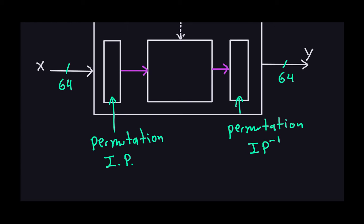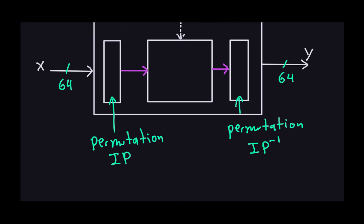The final permutation undoes whatever the initial permutation does. Of course, if these two permutations were the only thing in the encryption, they would cancel each other out and you'd get back the plain text. But something else is happening inside the inner box.